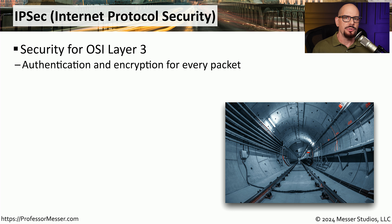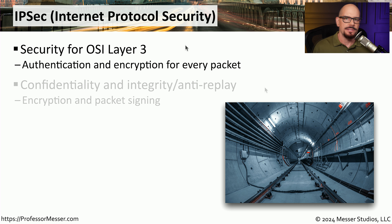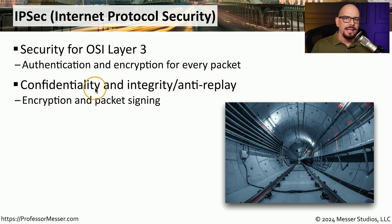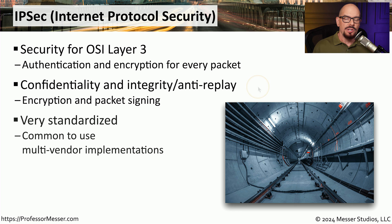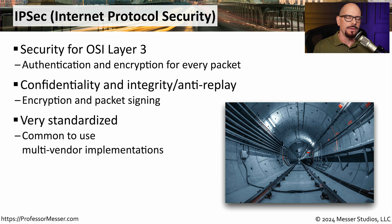One of the popular protocols used to provide encryption over those tunnels is IPSEC, which stands for Internet Protocol Security. It's one of the most popular ways to encrypt data being sent across VPNs. Not only does IPSEC provide encryption for confidentiality, it can also provide digital signatures of every packet, which includes integrity and anti-replay functionality. IPSEC is also a very common protocol that can be used across many different manufacturers' devices — for example, a firewall from one manufacturer on one side and a completely different manufacturer on the other side can easily connect because IPSEC is such a standard protocol.